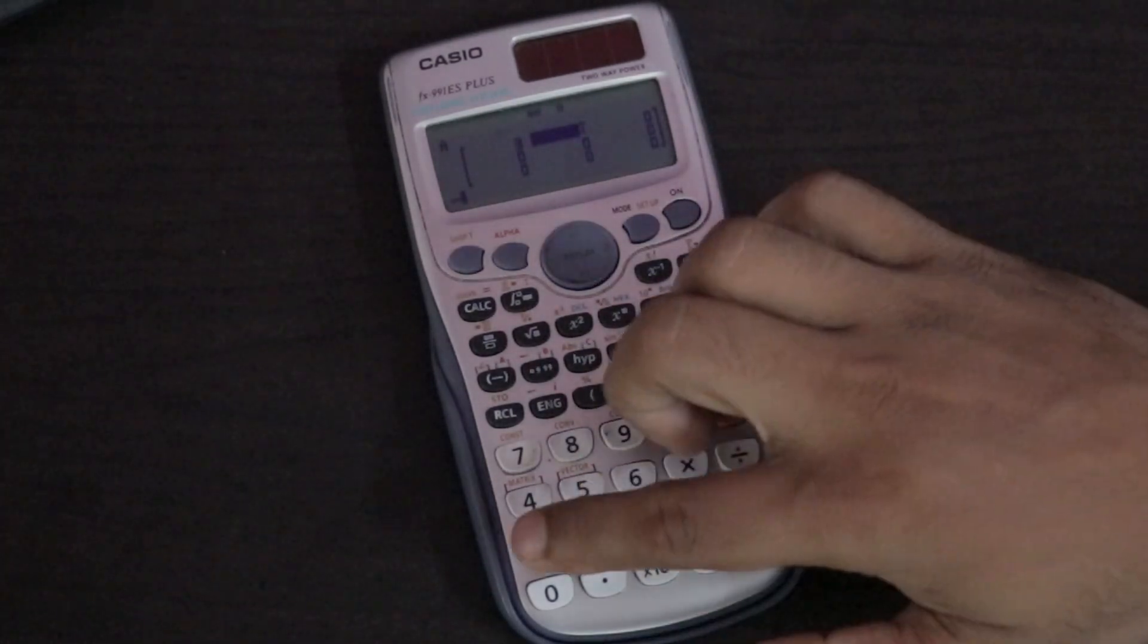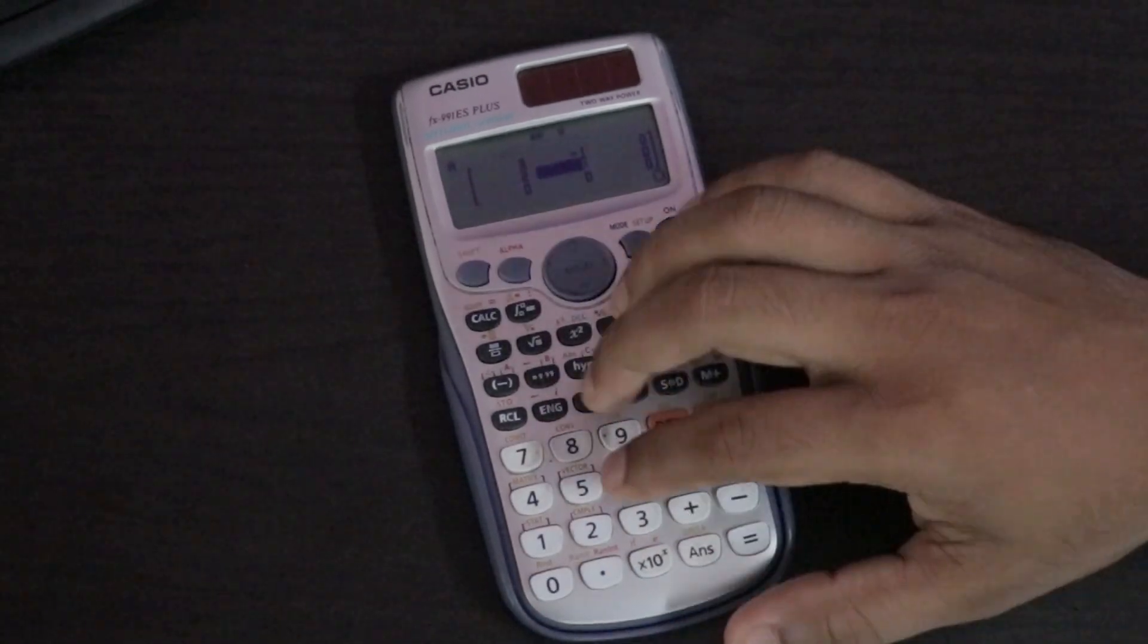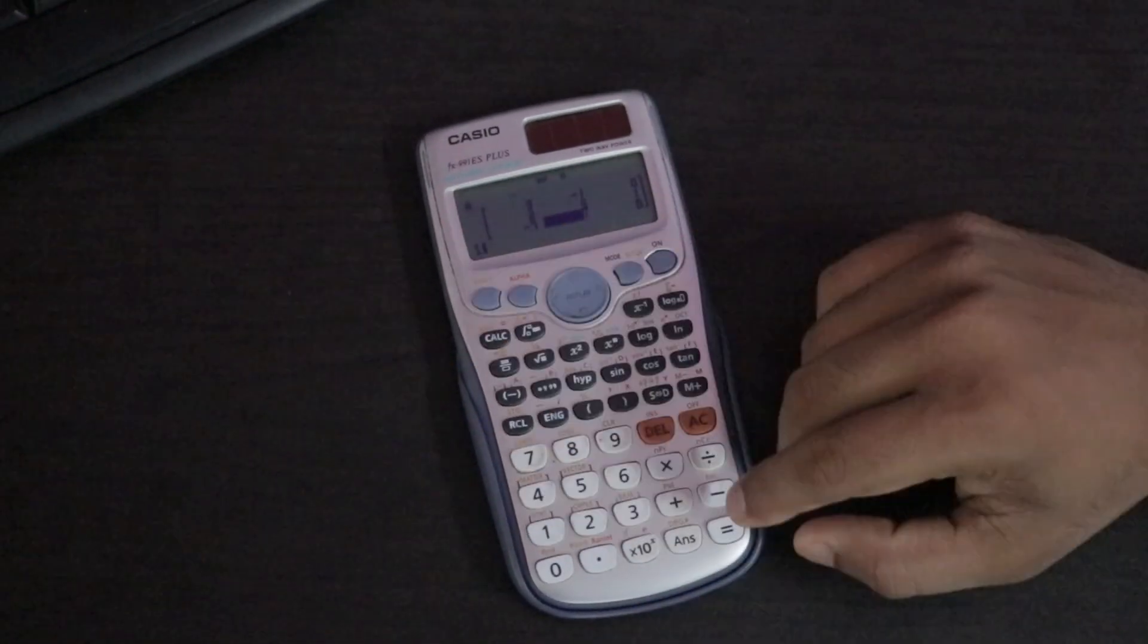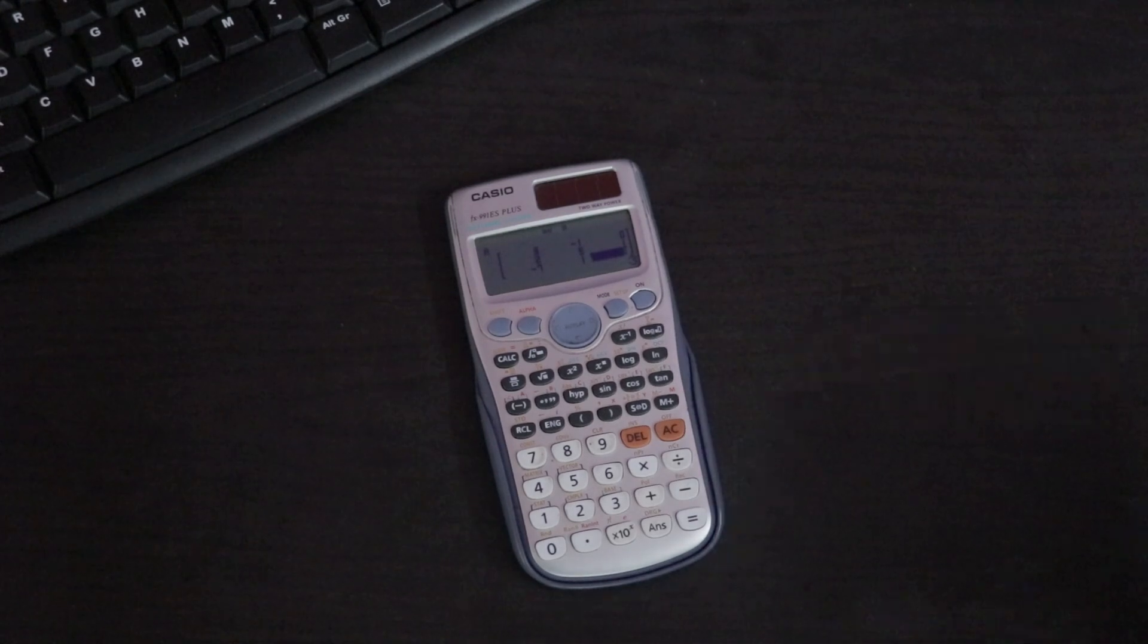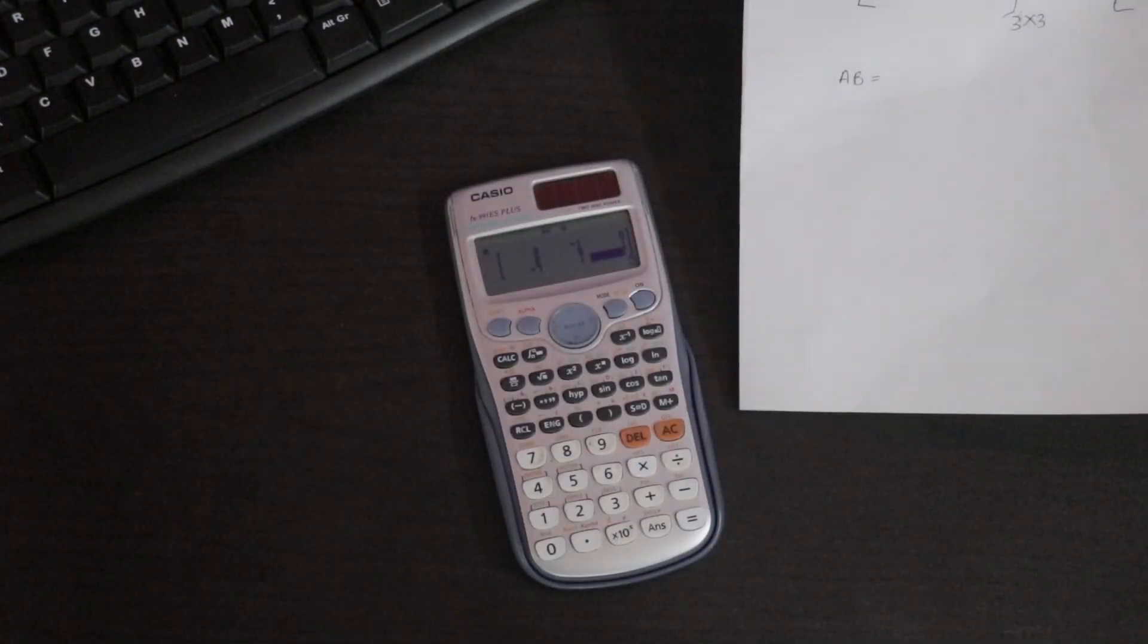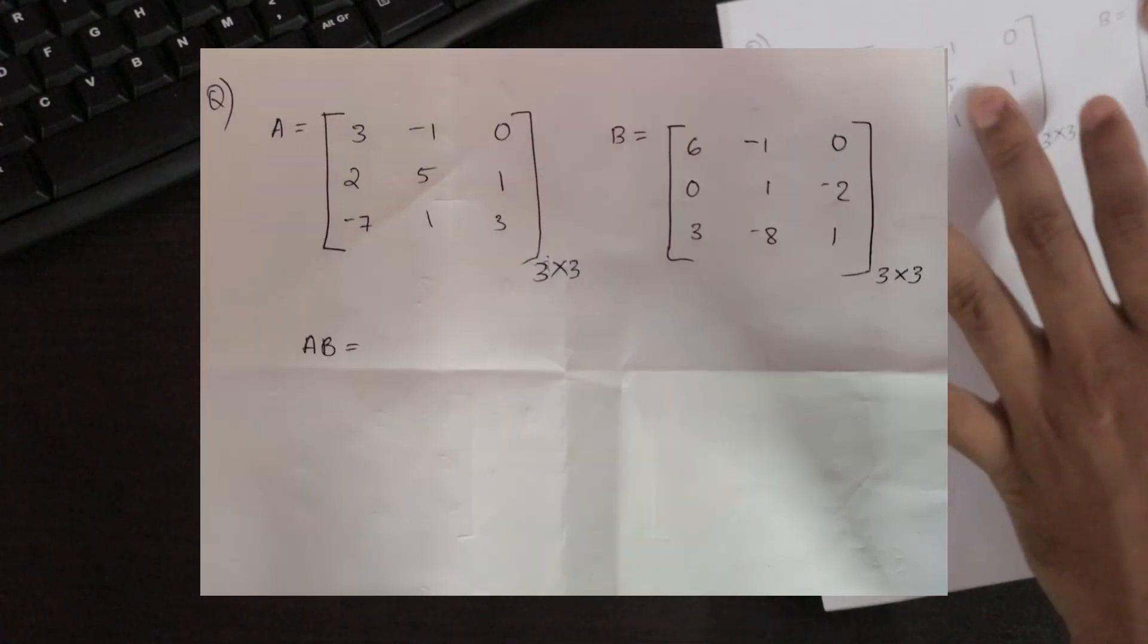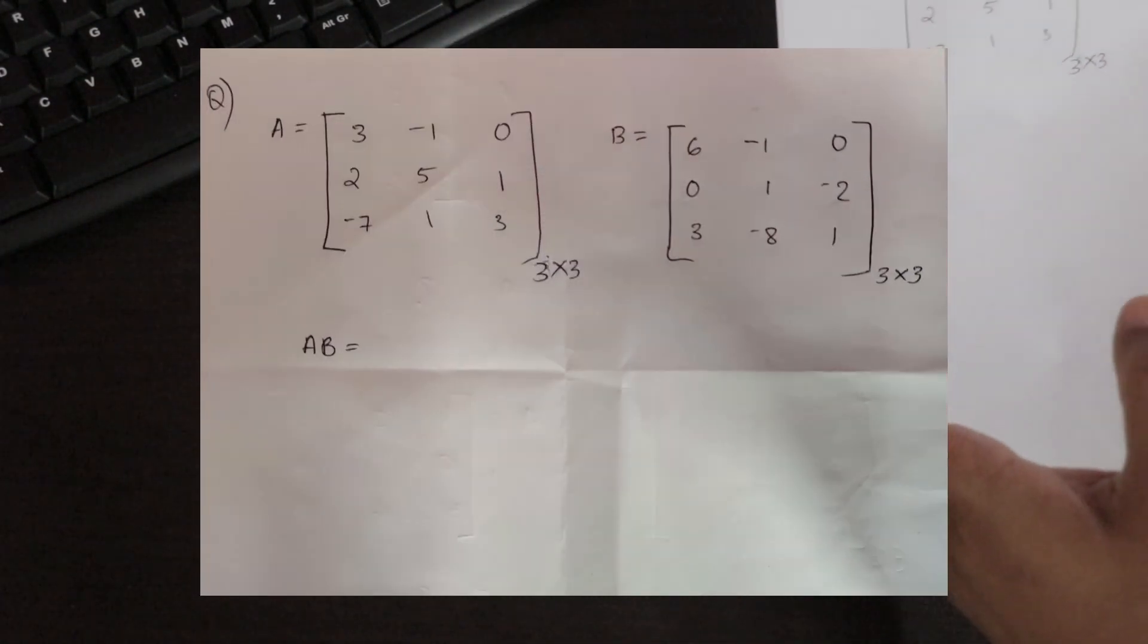Repeat the step. Then minus 1, then 0, 2, 5, 1, minus 7, 1, and 3. I put all the matrix A elements here. As you can see here, each element in the matrix will be stored in matrix A. Then the same step will be repeated for matrix B.